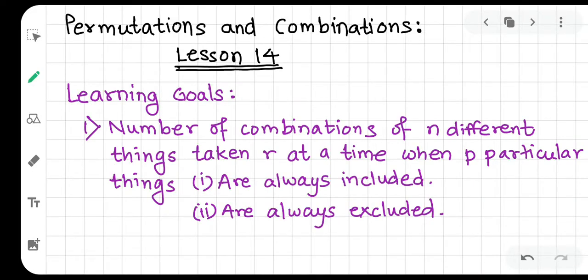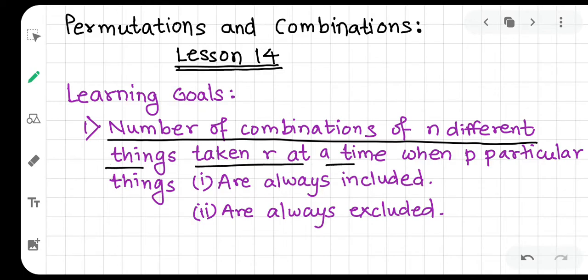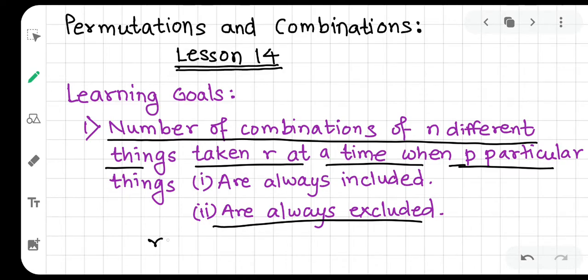Welcome all. This is Lesson 14 of the chapter Permutations and Combinations. Here we are going to learn to find the number of combinations of n different things taken r at a time, when p particular things are always included or always excluded. Obviously, r is less than or equal to n, and p is less than r.